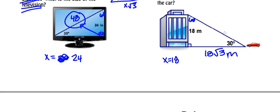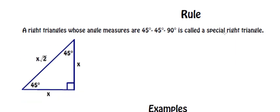Now the second important special right triangle is a 45-45-90. This is always an isosceles triangle because two equal angles means two equal legs. The side lengths across from the equal 45° angles are each x, and then the hypotenuse is x√2. That is the ratio relationship for a 45-45-90 triangle.